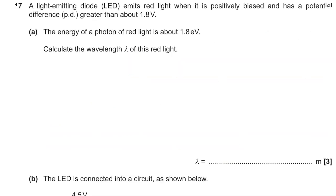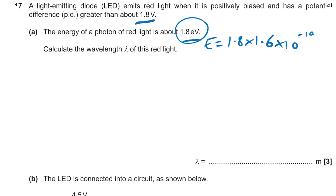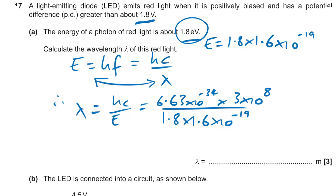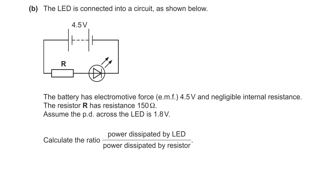Question seventeen: an LED emitting red light with a threshold PD of 1.8 volts, so photon energy = 1.8 eV. Converting to joules: 1.8 × 1.6 × 10⁻¹⁹. Using E = hc/λ, rearranging gives λ = hc/E = (6.63 × 10⁻³⁴ × 3 × 10⁸) ÷ (1.8 × 1.6 × 10⁻¹⁹). Working through the powers of 10 gives λ = 6.9 × 10⁻⁷ m, or 690 nm, which is correct for visible red light.